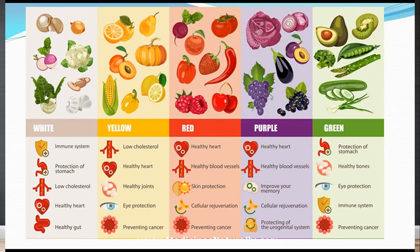Green-colored food materials have a protective action over the stomach, are responsible for healthy bones, protect the eyes, boost the immune system, and prevent cancer. Green-colored foods include green vegetables, beans, and fruits like kiwi or avocado.